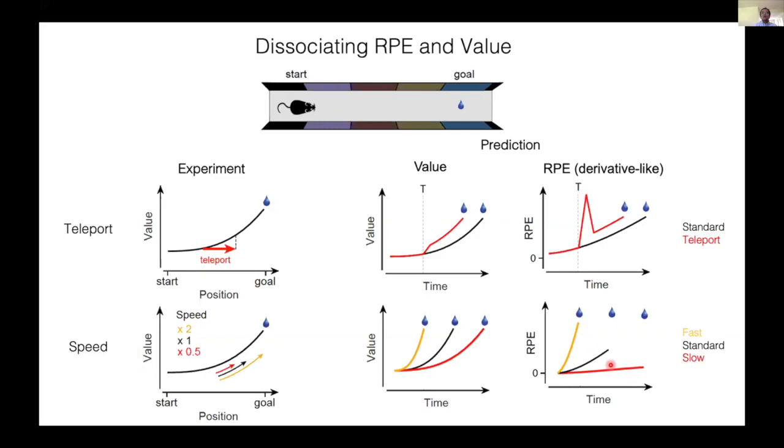In contrast, the value should end at the same level regardless of the speed, because at the goal now the animal is about to get the same reward with no more delay. It is important that this speed manipulation tests whether the ramp itself has the property of value or the derivative of it.